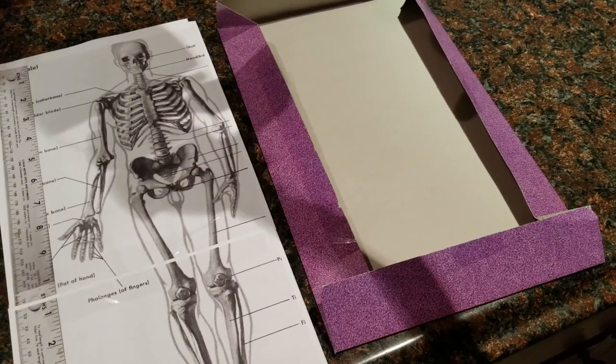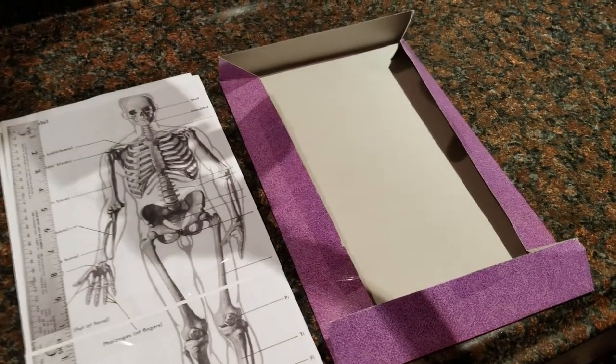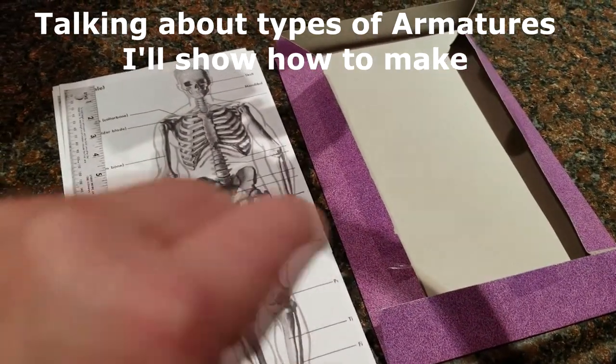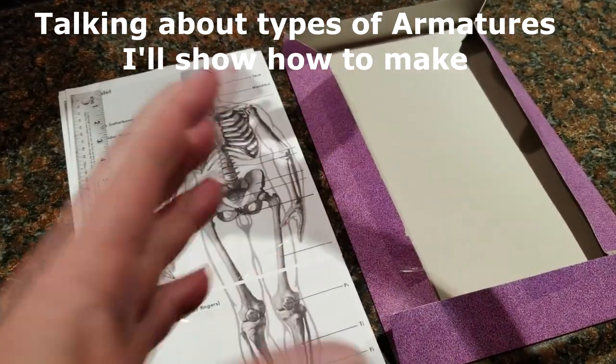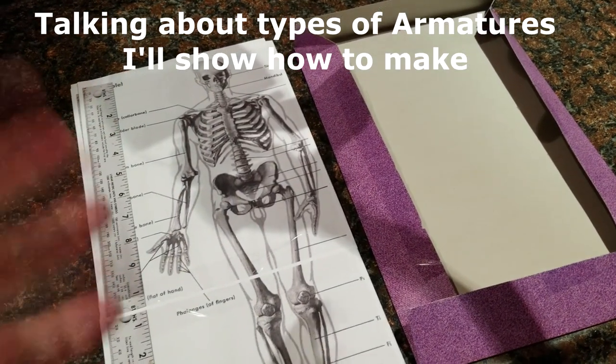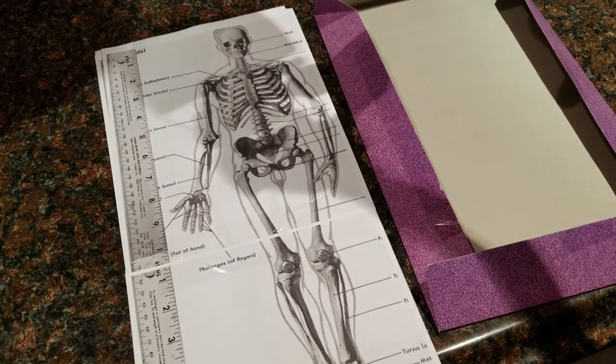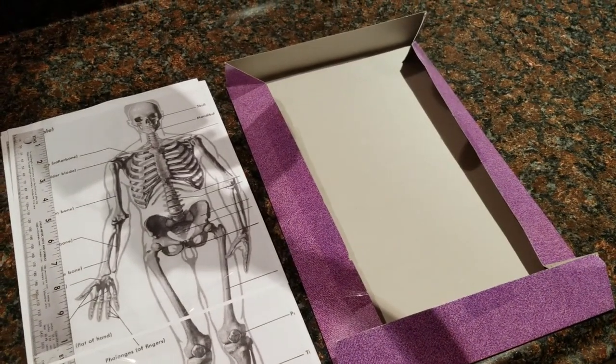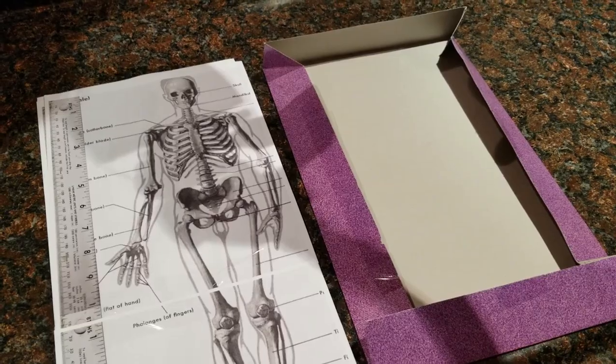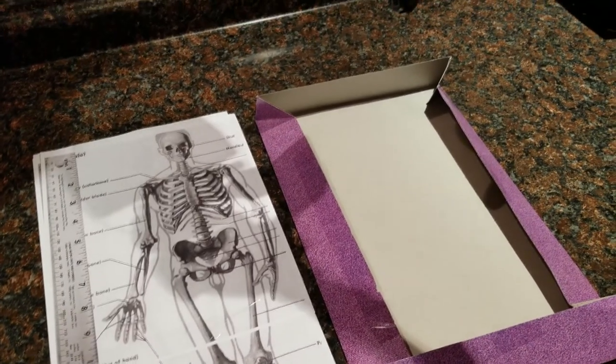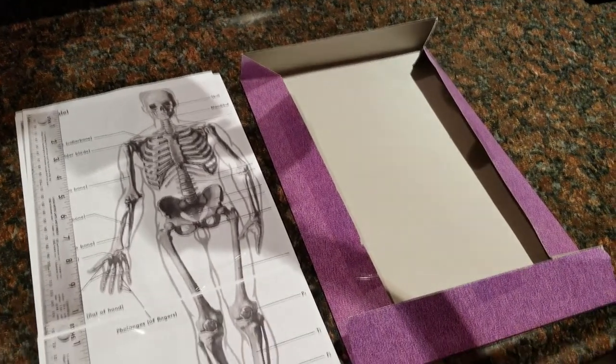And I'm just going to show you how to make armatures for, like say, this, a human, a horse, a buffalo, a dog, because I've got videos that I've shot in the past that show me making those, and it'd be just easy to throw it all together in one big DVD.